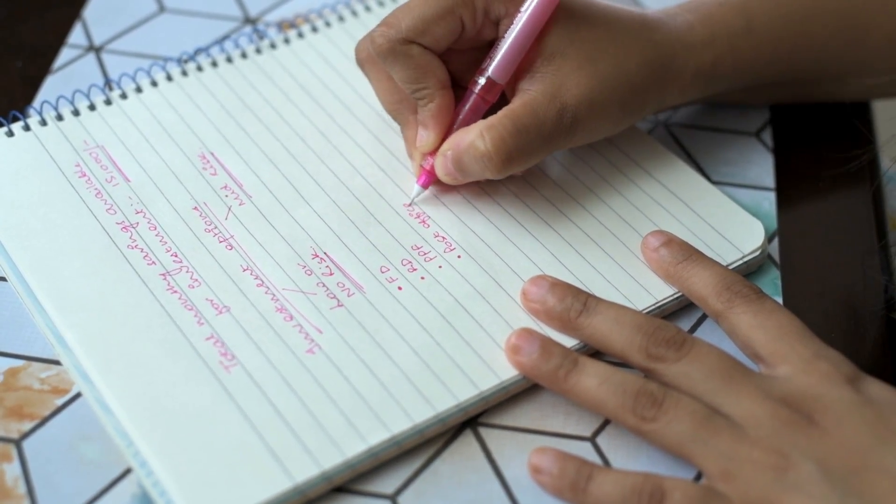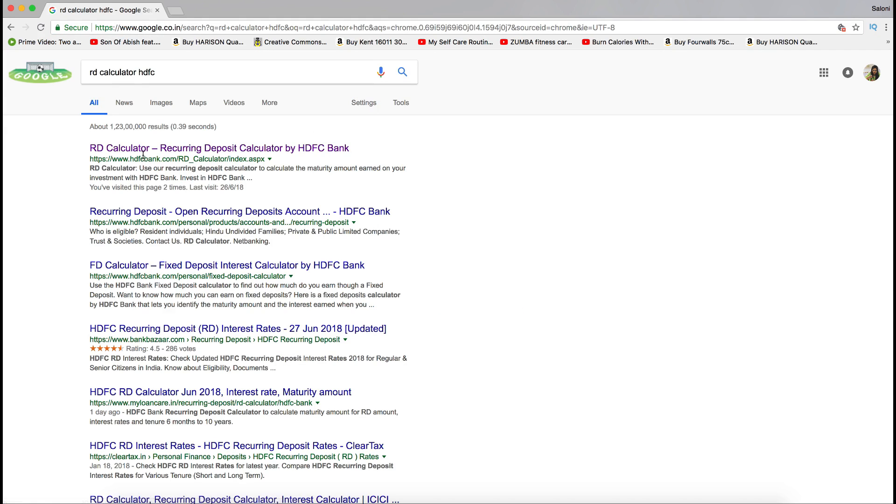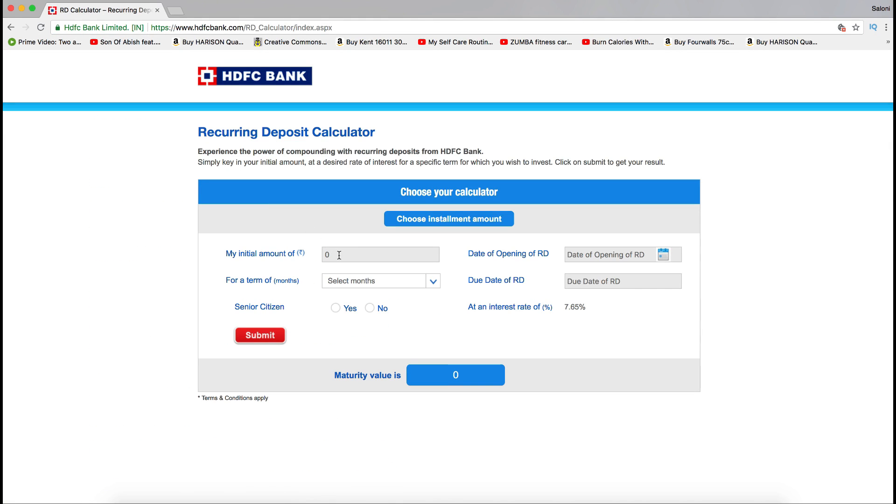I would suggest that you visit this particular website called RD calculator by HDFC bank. Go ahead, enter the amount of money that you are planning to invest every month, select the date when you think it would be possible for you to start investing, select the number of years for which you will be investing this amount on a monthly basis and submit your information. This calculator will quickly calculate the amount of money with interest that you will be getting by the end of your term. This will make your decision process very easy.